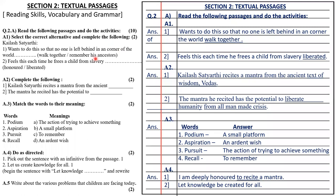Answer one: you have to select the alternative and complete it — want to do this so that no one is left behind in any corner of the world, walk together. Answer two: Kailash Satyarthi feels liberated each time he frees a child from slavery.